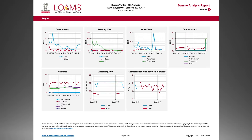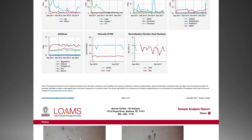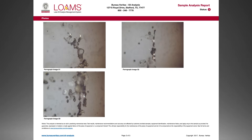If your LOAMS preferences are set to display graphs, they will appear on page 2. Up to 8 graphs can be customized to isolate problems. Any pictures associated with more advanced testing, like analytical ferrography or a micro patch, will display on page 3.